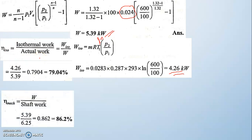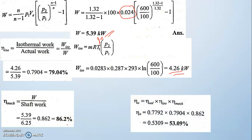Mechanical efficiency is the ratio of indicated (actual compressor) work to shaft work. The compressor is driven by a motor whose power is the shaft power. Not all motor power converts to compression work — some is lost as mechanical friction. Mechanical efficiency = indicated power / shaft power = 86.2%. Overall efficiency is the product of volumetric efficiency × isothermal efficiency × mechanical efficiency = 53.09%.